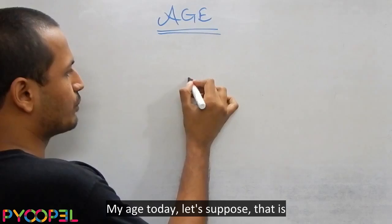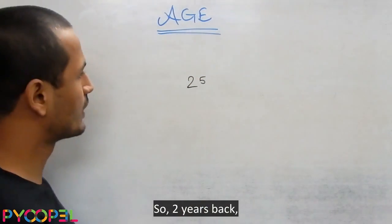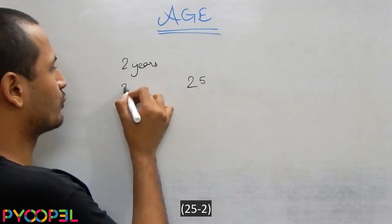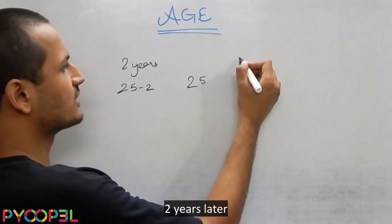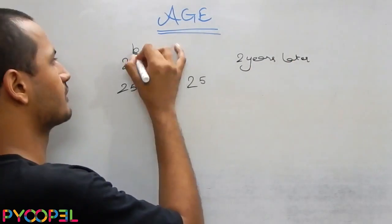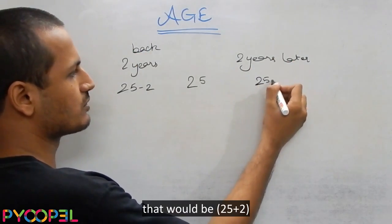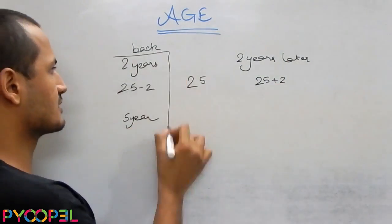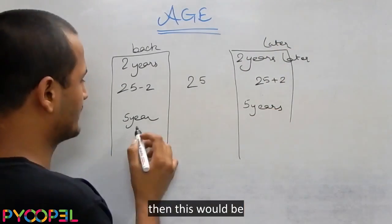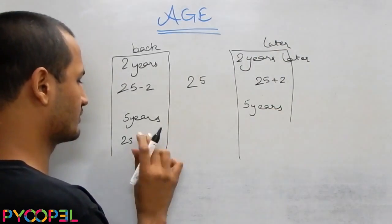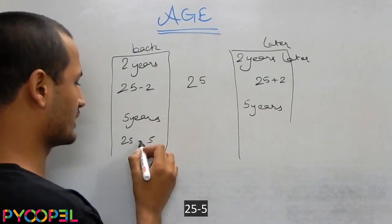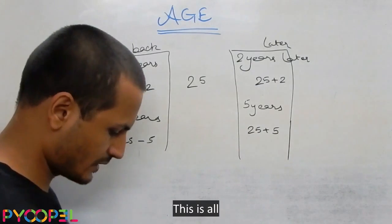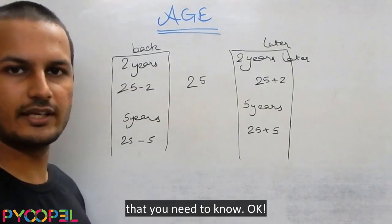My age today, let's suppose, is 25 years. So two years back that would be 25 minus 2. Two years later that would be 25 plus 2. Similarly, five years back would be 25 minus 5, and five years later would be 25 plus 5. This is all that you need to know.